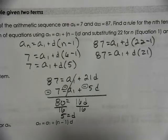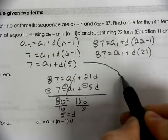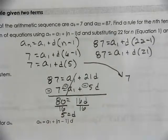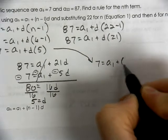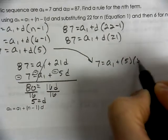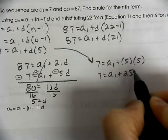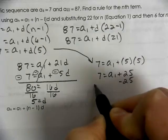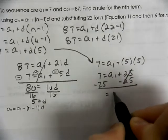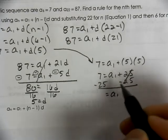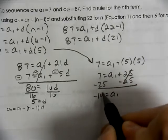Once d equals 5, we can plug it into either equation. We're going to take 7 equals a of 1 plus 5 times 5. And our a of 1 here is going to be negative 18.